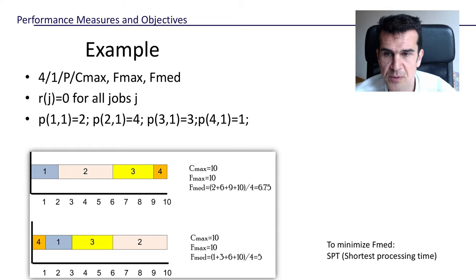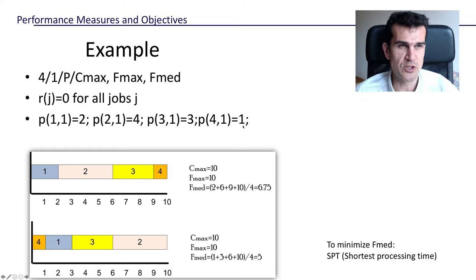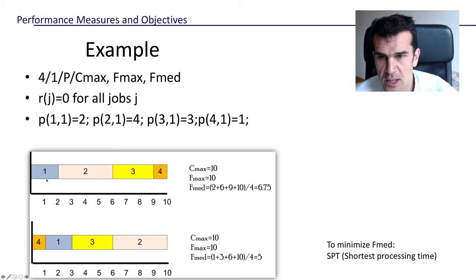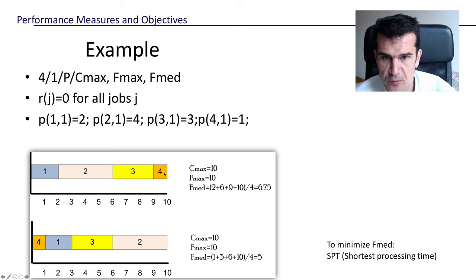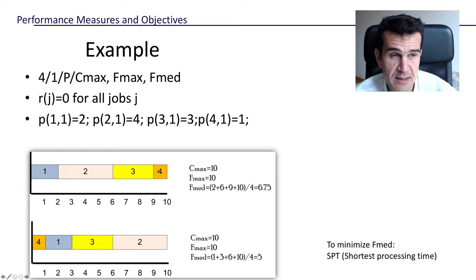We assume this is a static problem, so all jobs are ready to be executed from time zero. The processing times are: job one requires two time units, job two requires four time units, job three requires three time units, and job four requires just one time unit. For any order we choose, the completion time C_max will be ten, and since it's a static problem, F_max will also be ten.